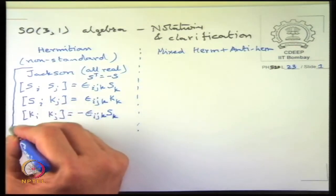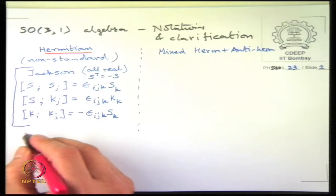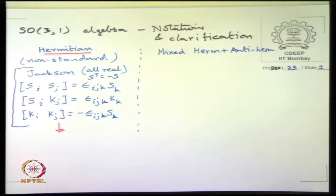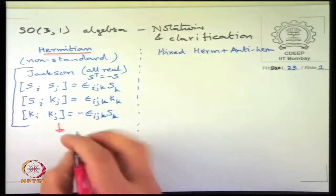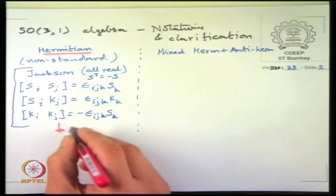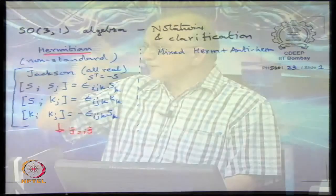To recover our notation from this — which was Hermitian — we need to define J equal to i times S. This makes everything Hermitian because the K's are symmetric (just 1, minus 1 on the 0th row and column), and the rotation matrices were anti-symmetric, but multiplying by i makes them Hermitian.